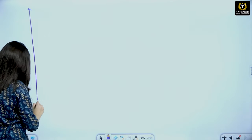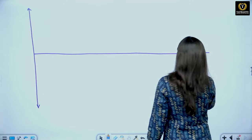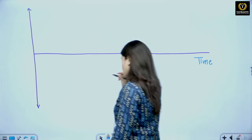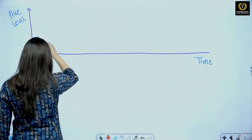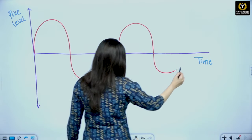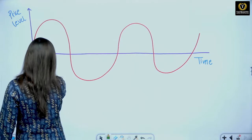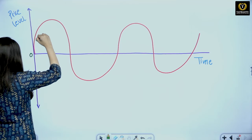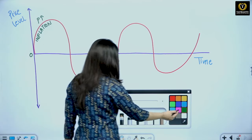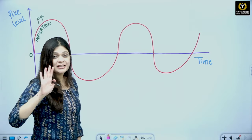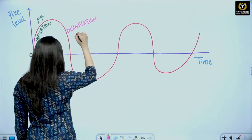On this diagram we have time on one axis and price level or economic activity on the other. When the price level is rising, we say there is inflation. When inflation is decreasing — going towards zero but still positive — then we say this is disinflation. Basically, the inflation rate is going down; for example if it was 7 percent, now it is 6 percent, now it is 5 percent. That is disinflation.